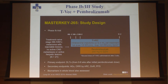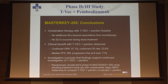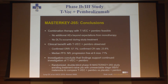I'd like to mention the MASTERKEY-265 trial, a phase 1b/3 trial using TVEC — the herpes simplex virus — in combination with pembrolizumab. The phase 1b trial is finished with 21 patients treated, and we saw a tremendous overall response rate of 57% with the double agent. This is motivating the phase 3, which is currently ongoing as a multicenter worldwide trial, randomized and blinded, comparing TVEC plus pembrolizumab versus pembrolizumab alone as first-line treatment in late-stage melanoma patients.